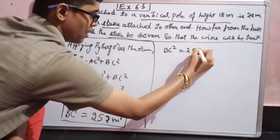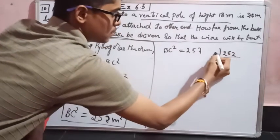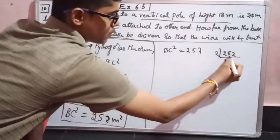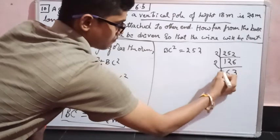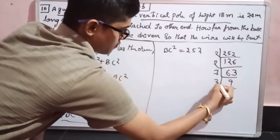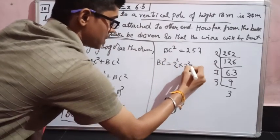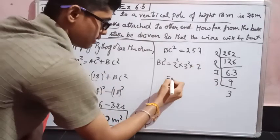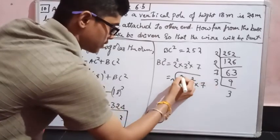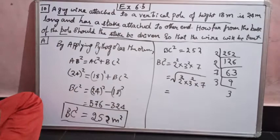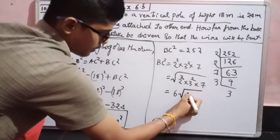BC² = 252. Now I need to find this root. Let me factorize 252 so that I will be getting the factors. Now I can write 252 as 2² × 3² × 7. Now if I take root, since 2 and 3 have squares, they will come outside the root. And I will get 6 outside. 2 multiplied by 3 is 6, and 7 remains inside the root.